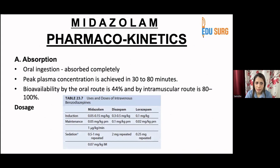Pharmacokinetics: absorption — if given orally, it is absorbed completely. Peak plasma concentration is achieved in 30 to 80 minutes. Bioavailability by the oral route is 44%, and by intramuscular route is 80 to 100%.